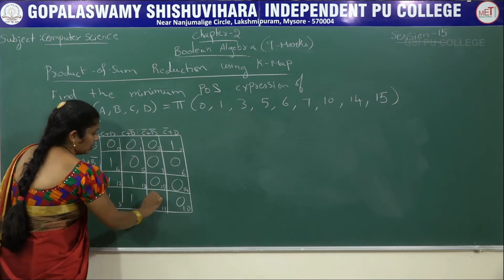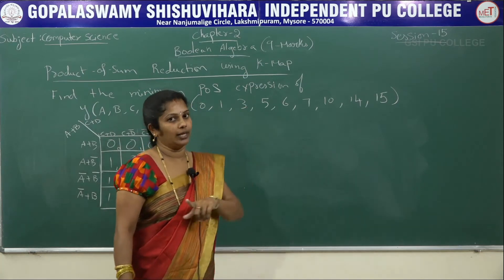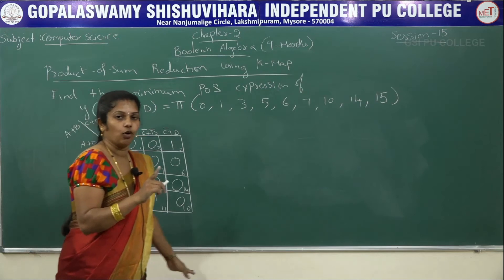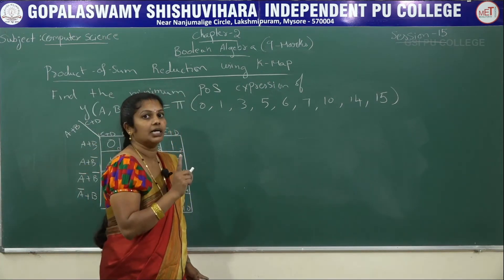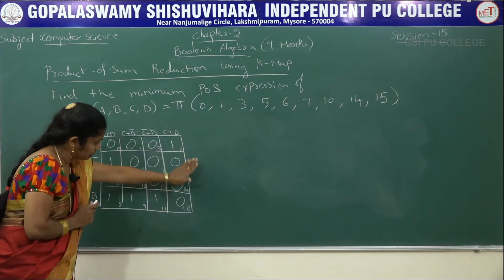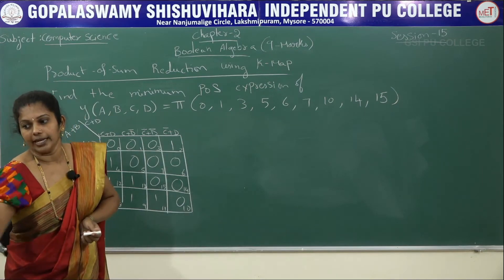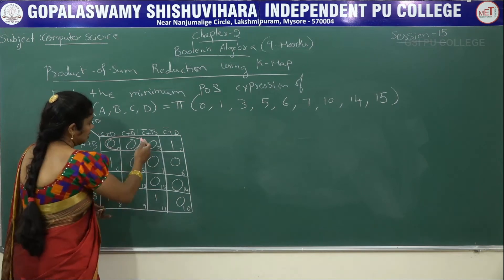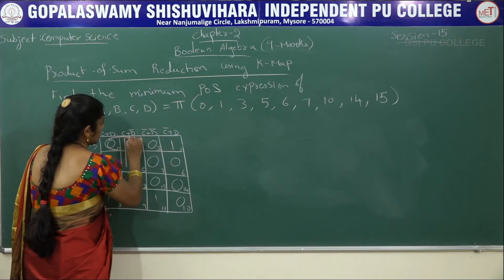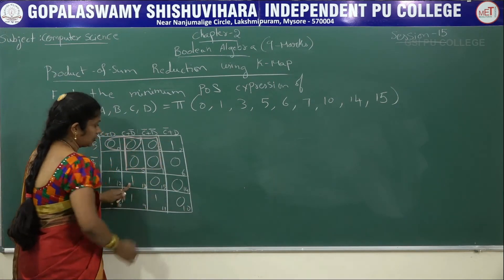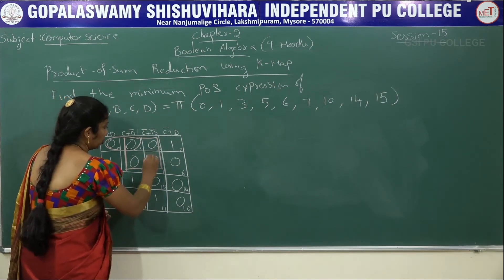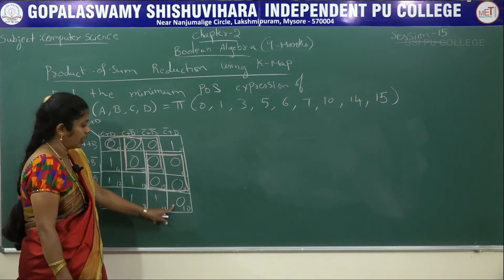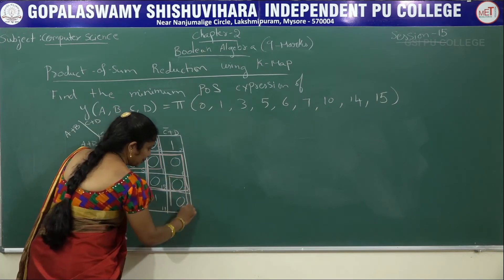Now we have to circle the 0s — whether in quad format, pair format, octet format, or roll mapping. Here, an octet of 3 is not possible. First, I will take a pair — this is the first pair. Next, I can take a quad here. Then check again: is another quad possible? Yes, take one more quad. Here, only one 0 remains — don't take it as single; make it a pair. This is the second pair.